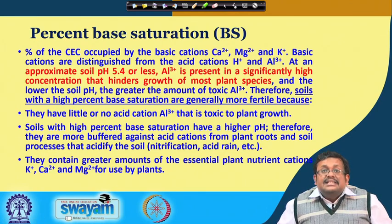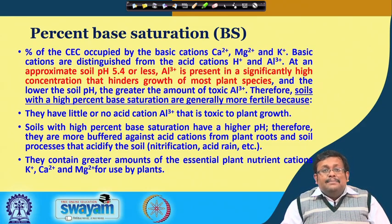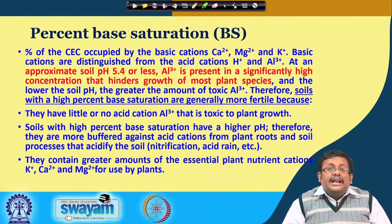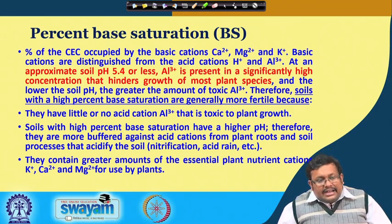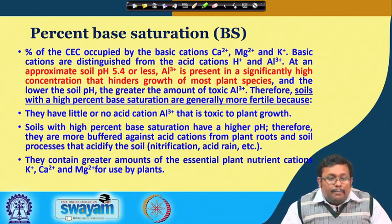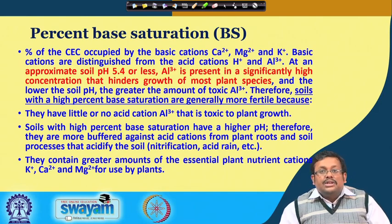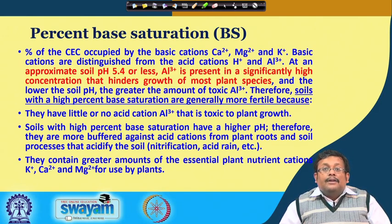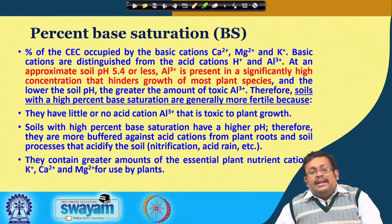Percent base saturation (BS) is the percentage of CEC occupied by basic cations. If we calculate what percentage of the total CEC is contributed by basic cations — calcium, magnesium, and potassium — we can calculate percent base saturation. Basic cations are distinguished from acid cations: basic cations are calcium, magnesium, and potassium, whereas acid cations are aluminum and H⁺.